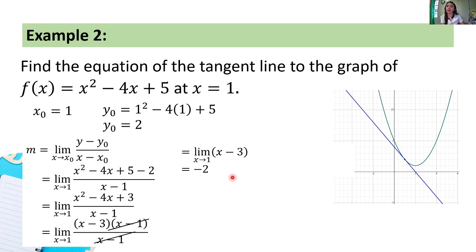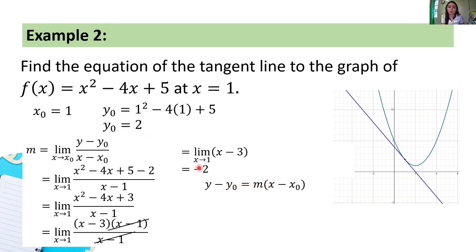Next, we use the point-slope form again. Substituting our values: y minus y₀ (which is 2) equals the slope (negative 2) times the quantity (x minus x₀, which is 1). So: y minus 2 = negative 2(x minus 1).